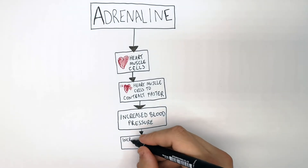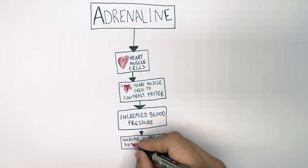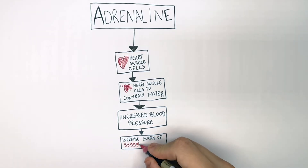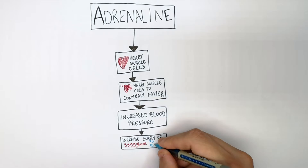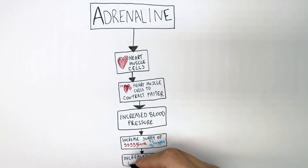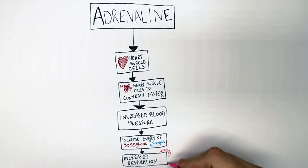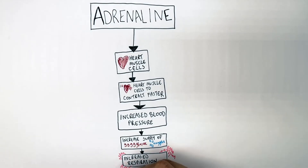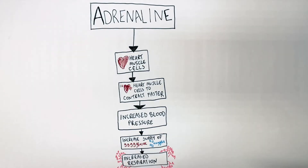This will then increase the supply of both glucose and oxygen to the cells. This will then increase respiration, increasing the amount of energy produced in the muscles so you can run faster and further for longer.